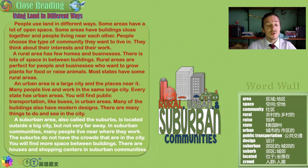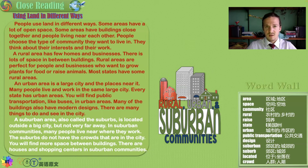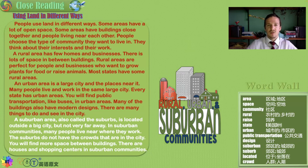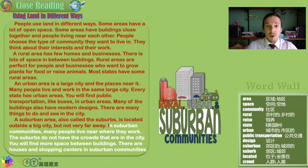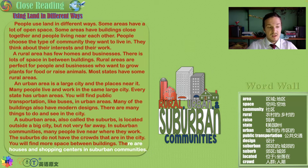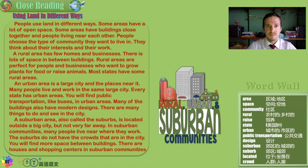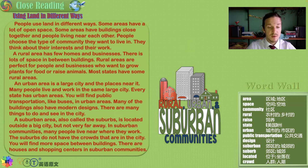In urban areas you will find public transportation like buses, and many of the buildings have modern designs. There are many things to do and see in the city — museums, theaters, beautiful parks, gardens to impress tourists, the best restaurants. A suburban area, also called the suburbs, is located outside a big city but not very far away. In suburban communities, many people live near where they work, and the suburbs do not have the crowds that are in the city — you will find more space between buildings.